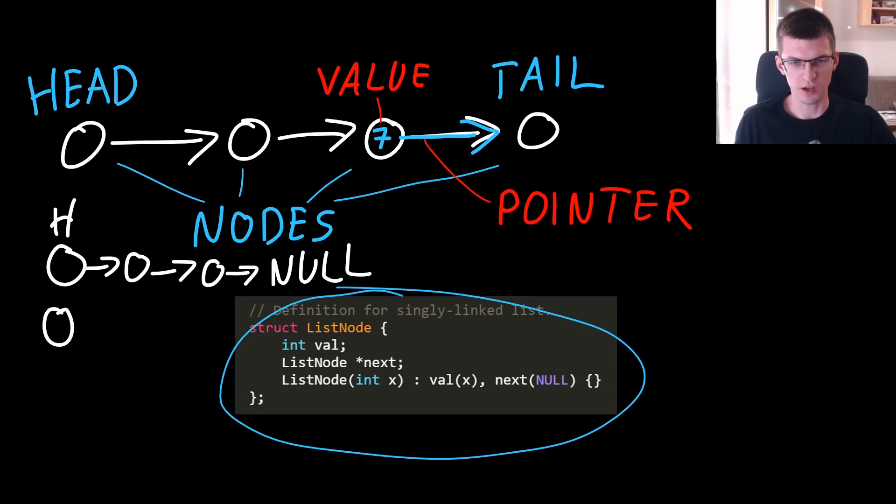This code below is a definition for a node of a list. It has indeed int value, pointer to the next node in a list and some constructor, so you could create a new node if you need to.